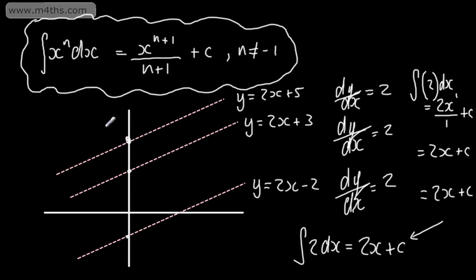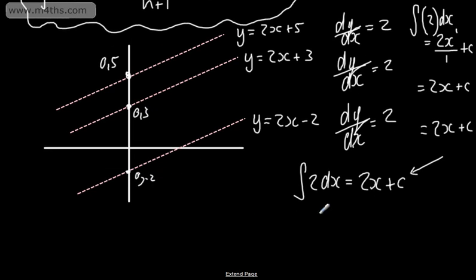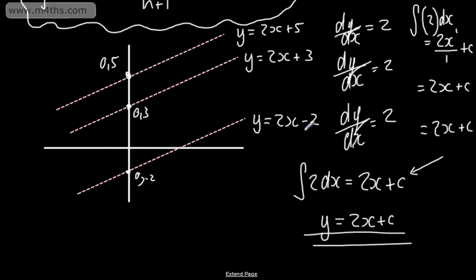For example, this point here is (0, 5), this point is (0, 3), and this one is (0, −2). We write y equals 2x plus c, and we substitute each of these boundary conditions in to find the value of c, which is our constant of integration. So when integrating powers of x: raise by a power, divide by the new power, and add a constant of integration. We won't necessarily be integrating with respect to x — it could be any variable.